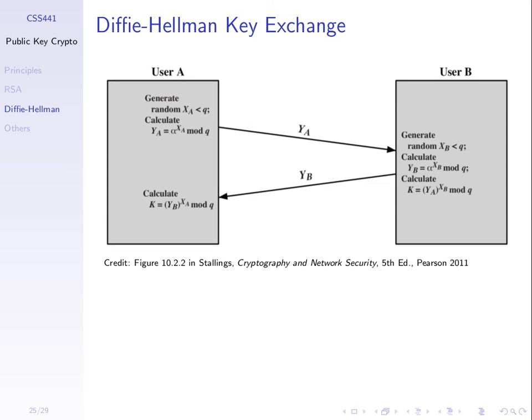The Diffie-Hellman key exchange is used for exchanging a secret. The aim is that A and B have one value which is the same — the secret — and no one else knows that value. This is useful if we want to do symmetric key encryption.